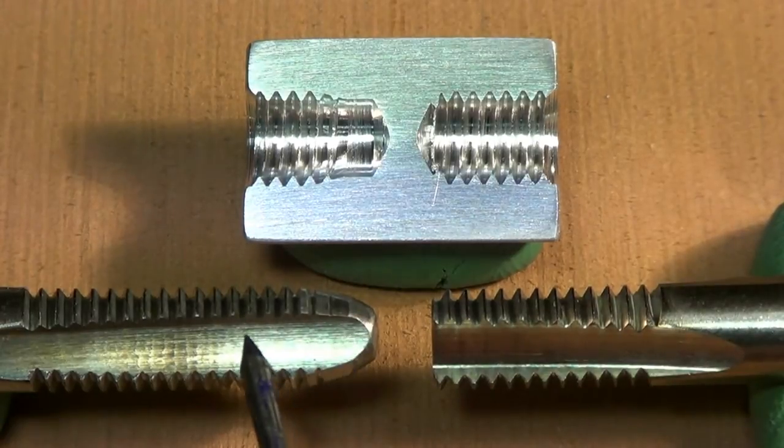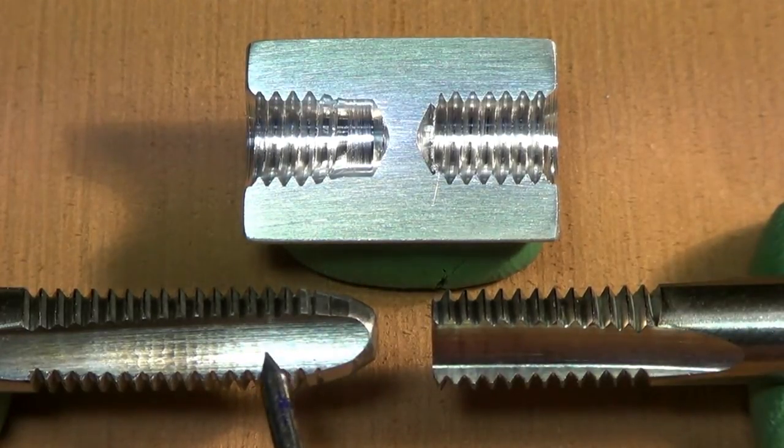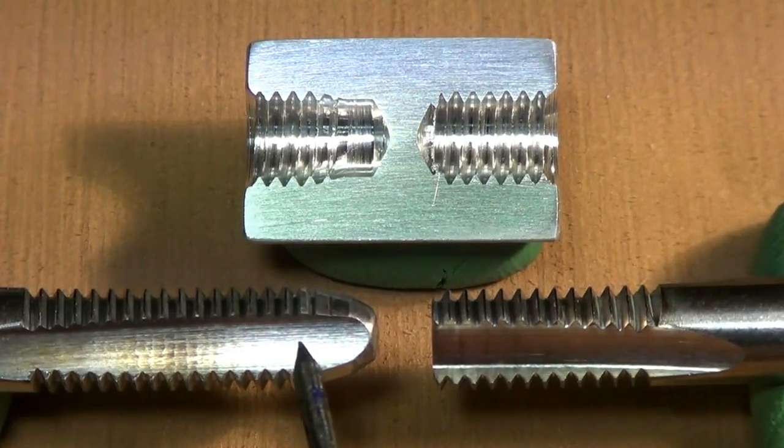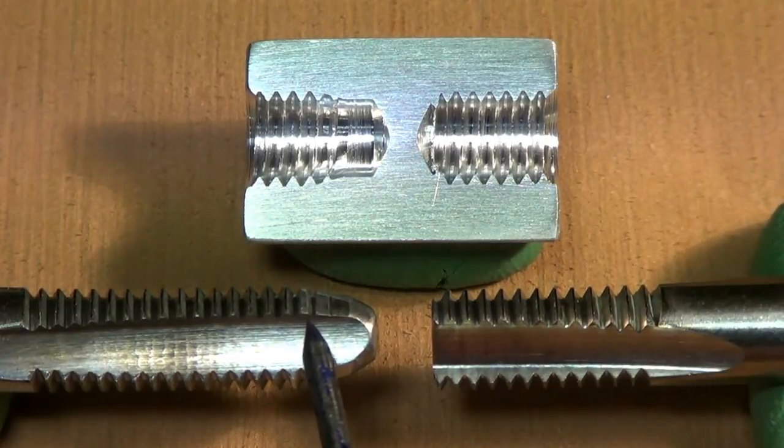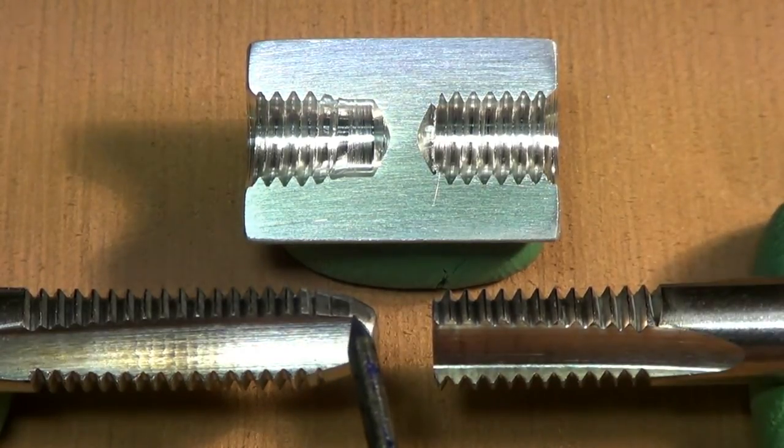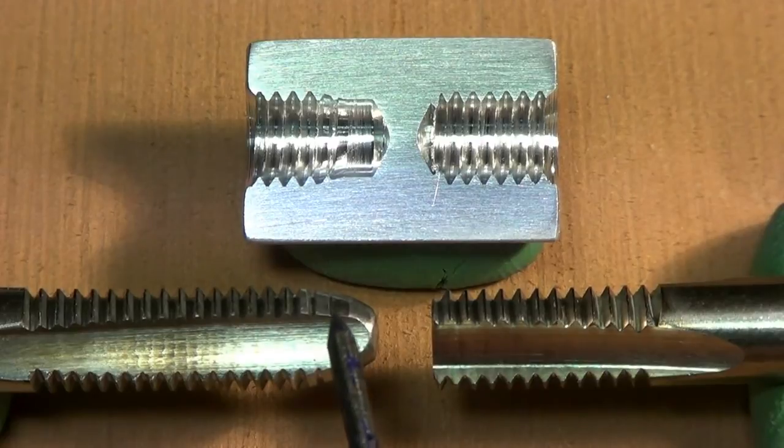On the left here is a typical bottoming tap, and as you can see the threads don't fully go to the end of the tap. There's still a few threads of lead-in taper to the tap.